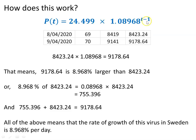Here's our equation describing the blue curve. Taking two successive days — the 8th of April and the 9th of April — the number of confirmed cases on the 8th was 8,419, but the model predicts 8,423.24, and for the 9th of April the predicted number is 9,178.64. It's not possible to have 0.24 of a case or a person — the decimal is included only so that anyone watching can take out their calculator and verify the mathematics.